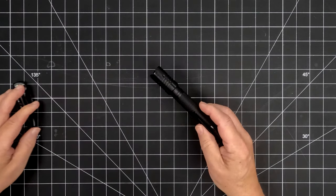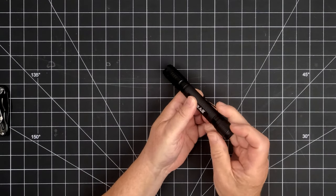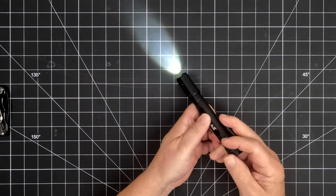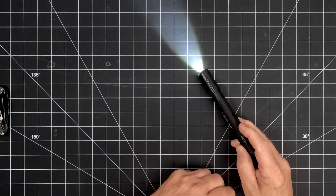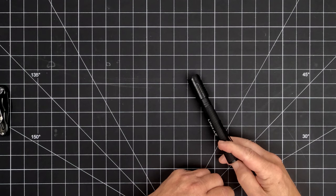The flashlight features two brightness modes, selectable by repeatedly pressing the power button. High is up to 280 lumens with a one and a half hour runtime and low is 70 lumens with a five hour runtime.